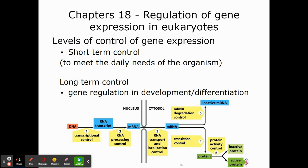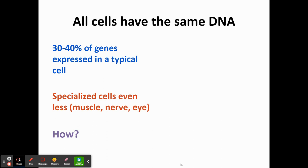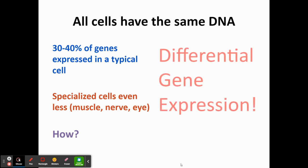Remember, in a prokaryote we can turn the operon on or off. In any typical cell, only about 30 to 40% of the total number of genes will be expressed. In specialized cells, such as muscle, nerve, or eye cells, even fewer genes will be expressed. This process happens through differential gene expression — some cells are going to turn on certain genes, which are going to be different from other types of cells. Only a small fraction of total genes in any particular cell are turned on and made into protein products.